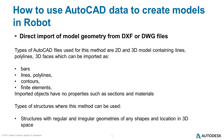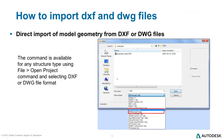Direct import of model geometry from DXF or DWG files is typically used for structures with complex shapes which are difficult to define directly in Robot, or for data transfer from other programs where there is no dedicated link to Robot. Imported objects have no properties such as sections and materials — those have to be assigned afterwards in Robot after you import the geometry. To input DWG or DXF models, use File > Open Project and indicate the type of file you want to open, being DWG or DXF respectively.